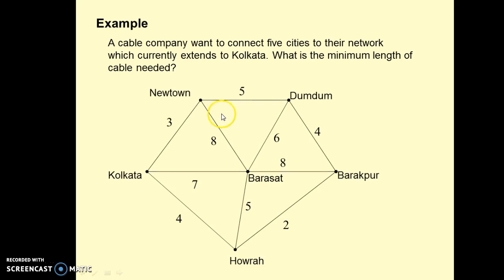So these are the different cities connected to Kolkata: Newtown, Domdom, Barashat, Barakpur, and Haura. Their edges are weighted. This is an undirected weighted graph.